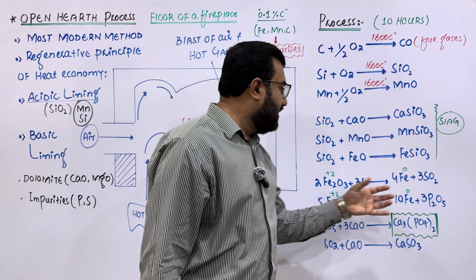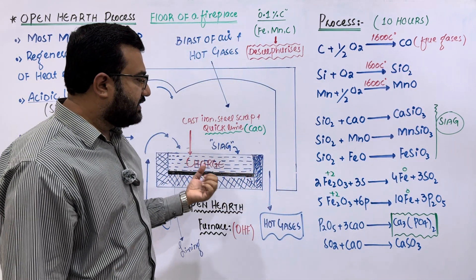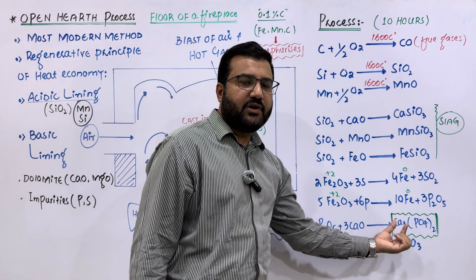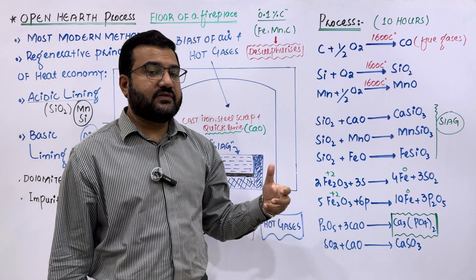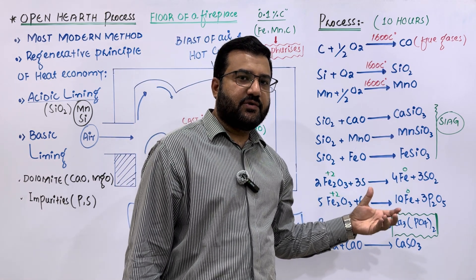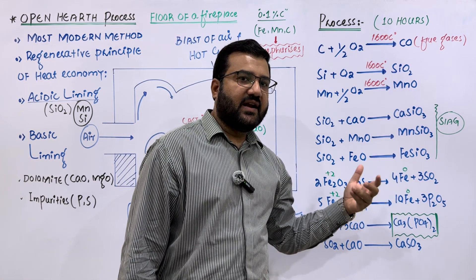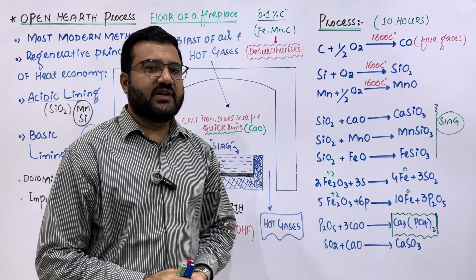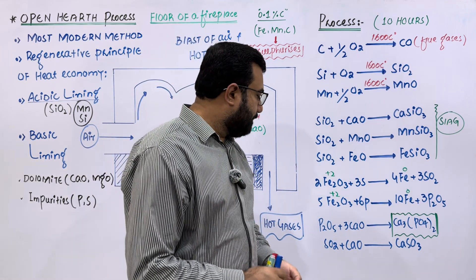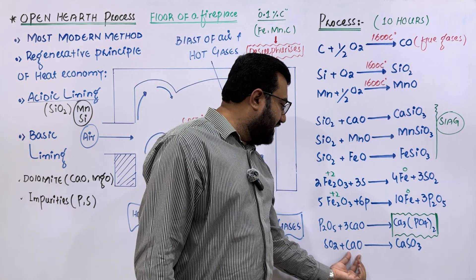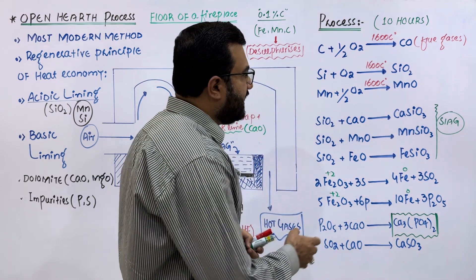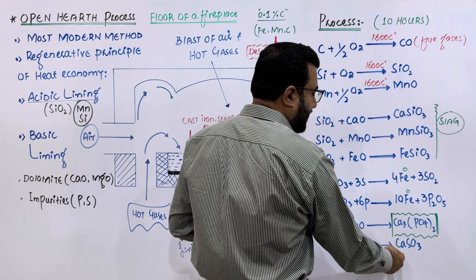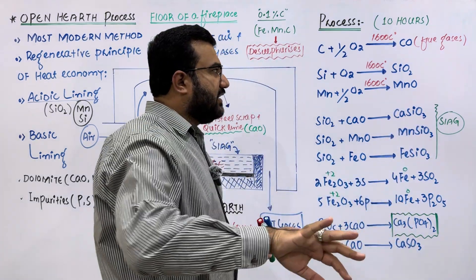The iron is present in the molten state. P₂O₅ reacts with the slag-forming agent to produce calcium phosphate, which is an important advantage of the open hearth process because calcium phosphate acts as an important fertilizer. Similarly, SO₂ reacts with calcium oxide to form calcium sulfide. All of these — calcium silicate, manganese silicate, iron silicate, calcium phosphate, and calcium sulfide — are present in the slag and are removed.